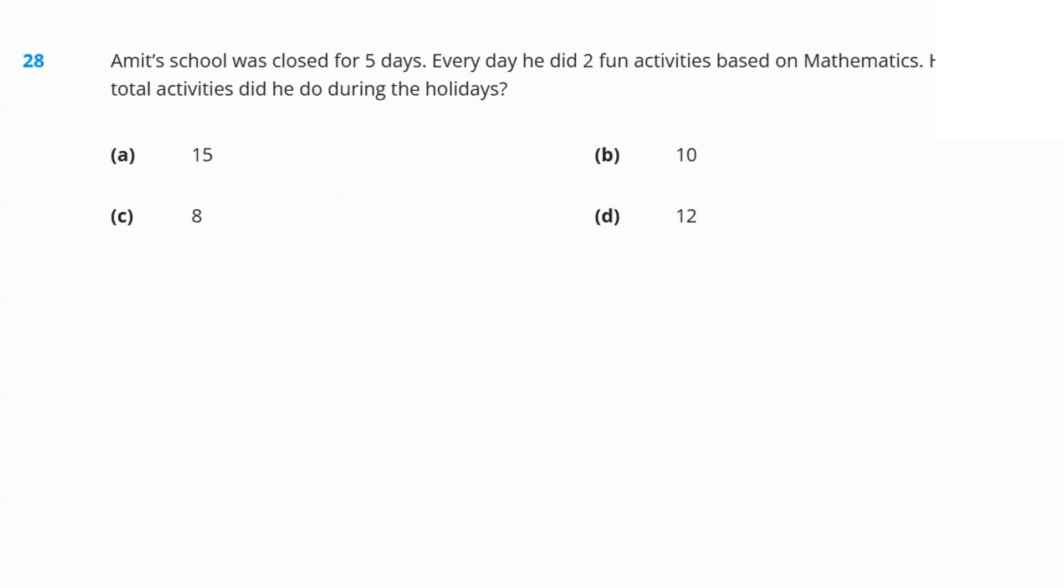Next, question number 28. Ahmed's school was closed for 5 days. Every day he had 2 fun activities based on mathematics. How many total activities he did during the holidays? School was closed for 5 days. Every day he did 2. That means 5, 2 times 10 activities he did during his holidays. Option B.